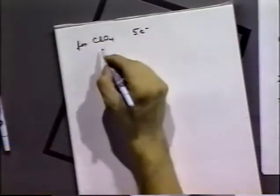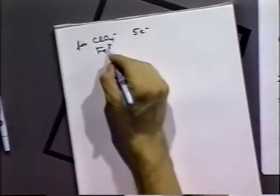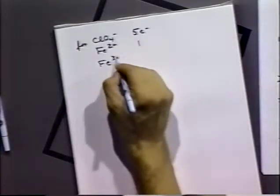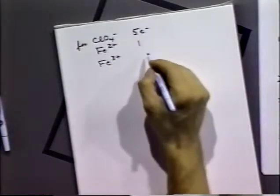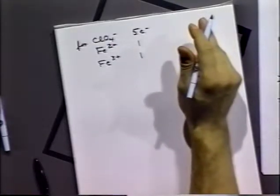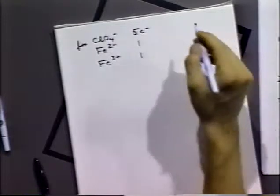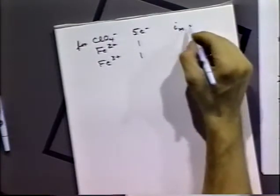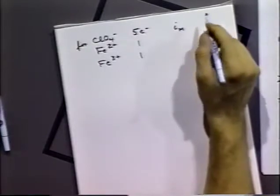So, four perchlorate is carrying five electrons. Iron two plus one electron. Iron three plus carries one electron. Why is that? I'm kind of screwing this up, I'm sorry. Let's try this again.